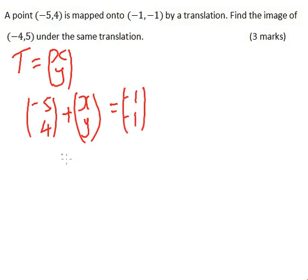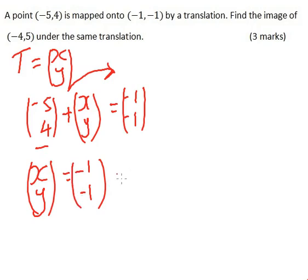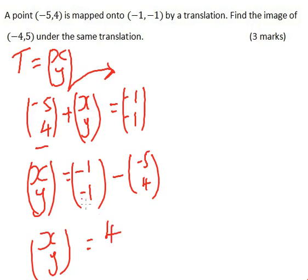Then we need to find the translation vector. So we take this to the other side and we'll have (x, y) equals (-1, -1) minus (-5, 4). So -1 minus (-5), that will be equals to 4. Minus 1 minus 4 will give you -5.